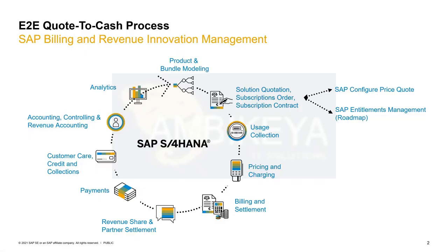Let me first talk about Subscription Order Management in general and its purpose. What you can see on the slide is the whole BRIM process, starting with product modeling via order, quotation, and contract management, including usage collection with mediation, pricing and charging with SAP Convergent Charging, then running through billing and settlement processes, and convergent invoicing, doing revenue share processes, and running all payment processes and FICA, finally also ending up in accounting and revenue accounting. Our solution, Subscription Order Management, focuses on product modeling and the part about quotations, orders, and contract management.